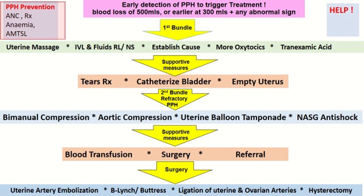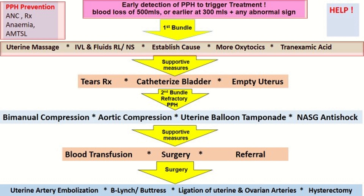Initially, we do early detection of PPH to trigger treatment. Blood loss of 500 mls, or earlier at 300 mls plus any abnormal sign, is detected and we go for the first bundle. The first bundle approach includes uterine massage, IV fluids — Ringer's lactate or normal saline — establishing the cause, giving more oxytocin, and tranexamic acid.